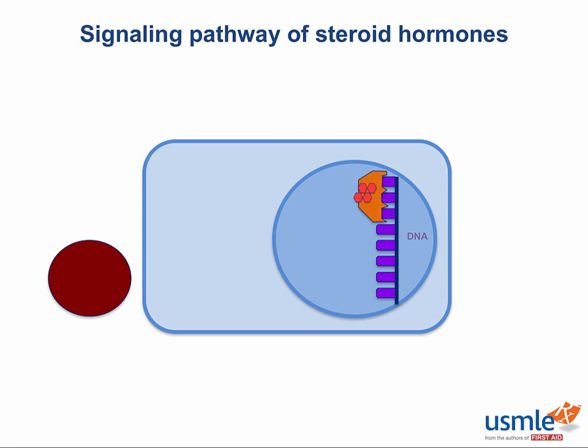Once that transcription factor binds to a corresponding gene sequence, a whole set of proteins take the cue to initiate transcription, leading to translation, protein synthesis, and a set of long-lasting cellular changes. These changes lack the immediate nature of the G-protein cascades, which require significant signal amplification. But the steroid hormones usually create much more permanent, long-lasting effects.